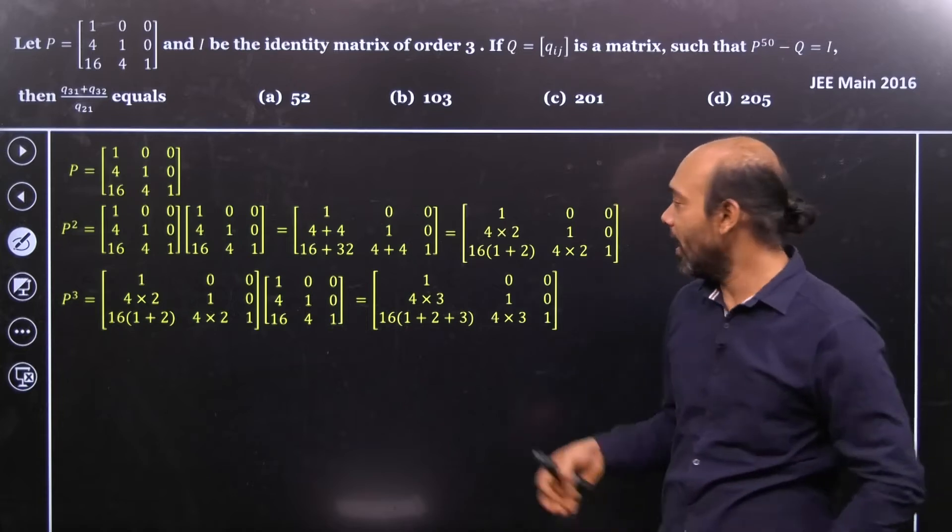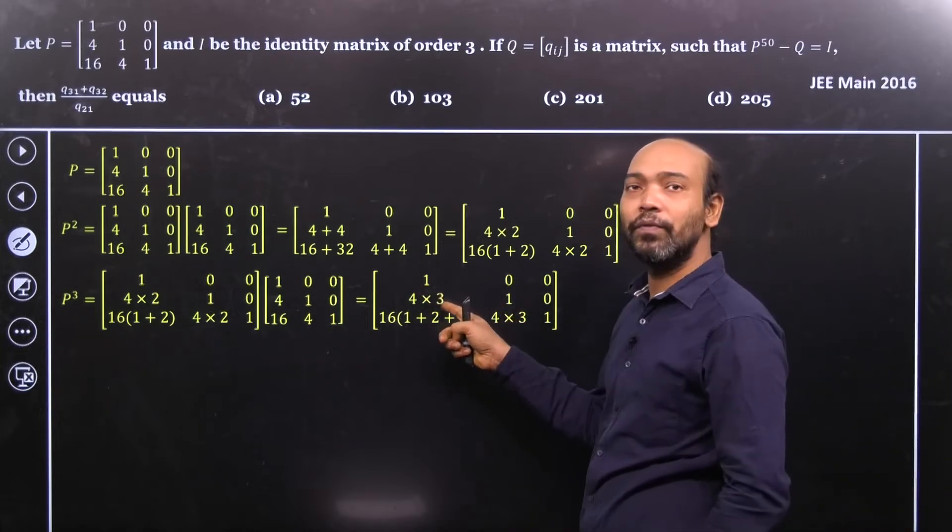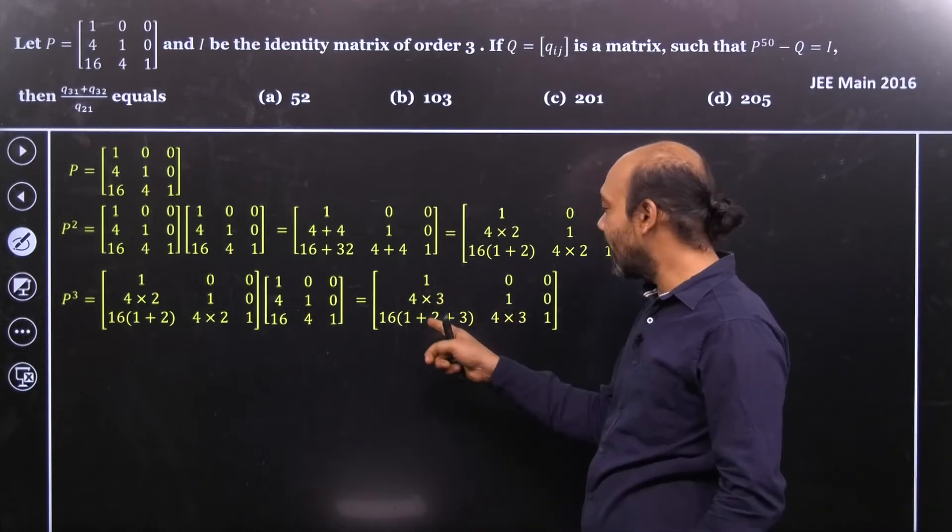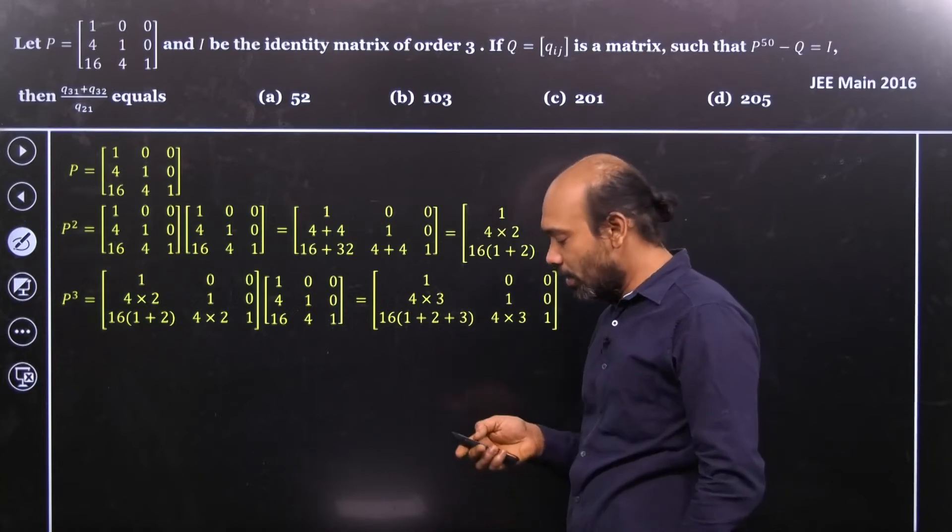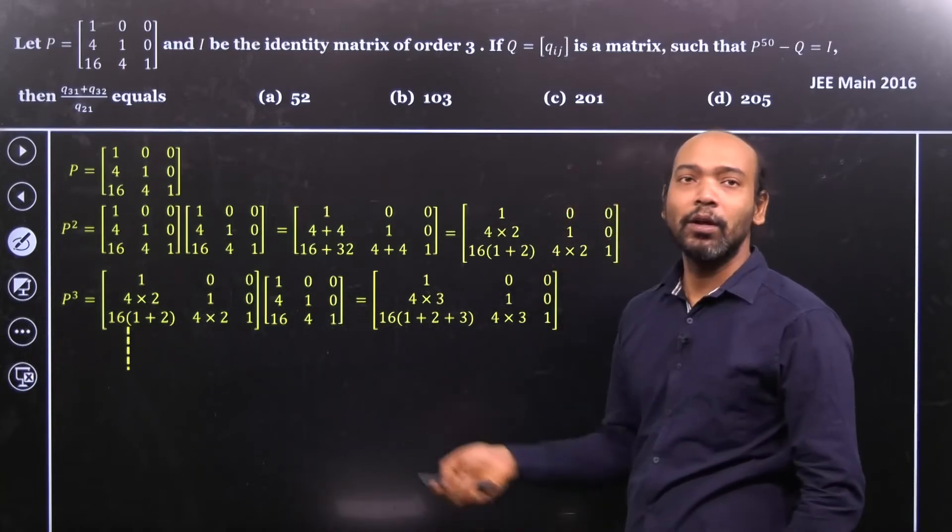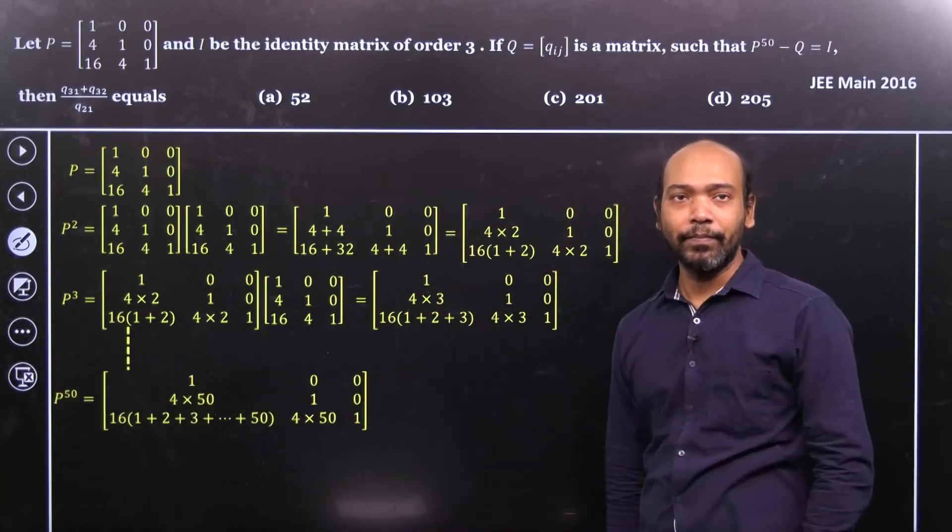So therefore, what is P to the power 50? P to the power 50 is actually 4 into 50, 4 into 50 and 1 plus 2 plus 3 plus dot dot dot to 50. So let's go ahead and predict, what is P to the power 50.